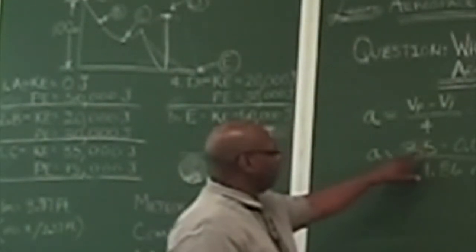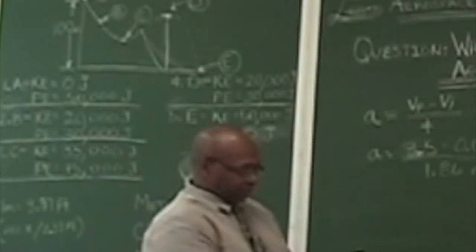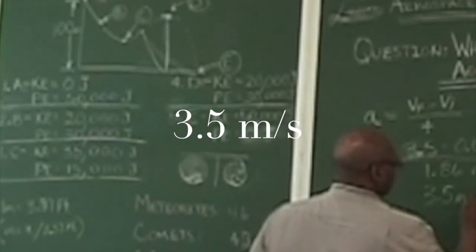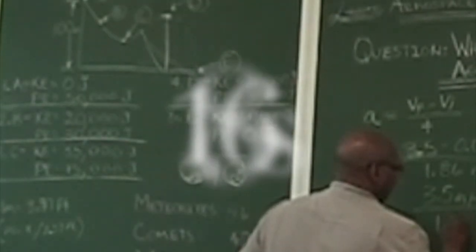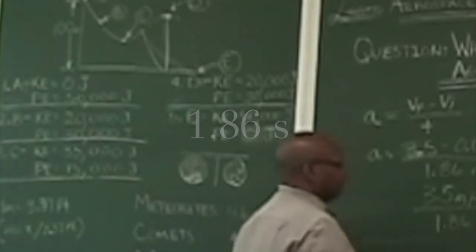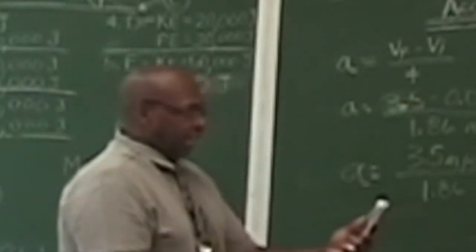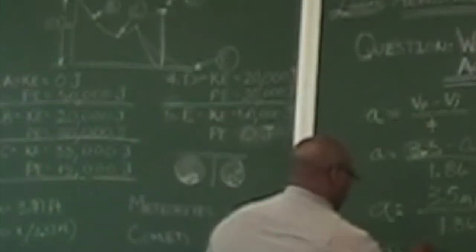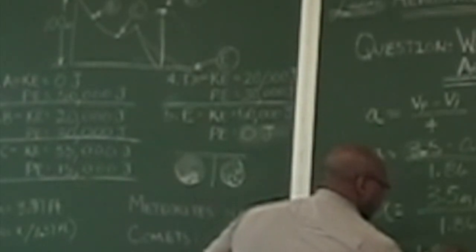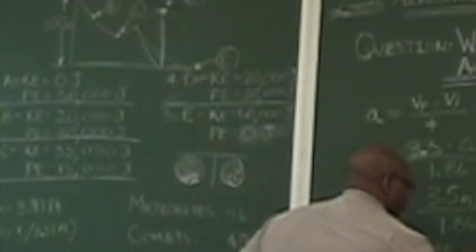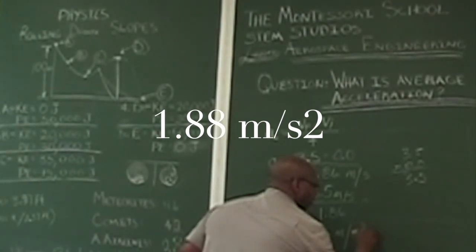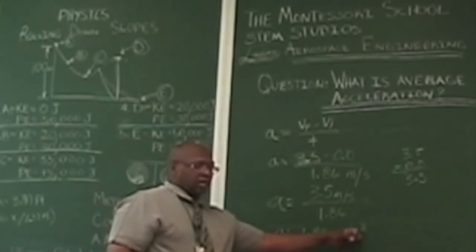Can someone tell me: 3.5 minus 0.0 equals what? Exactly — 3.5 meters per second, divided by 1.86 seconds. That equals 3.5 divided by 1.86, which equals 1.88 meters per second squared. Now watch this — acceleration is measured in meters per second squared: 1.88 meters per second squared.